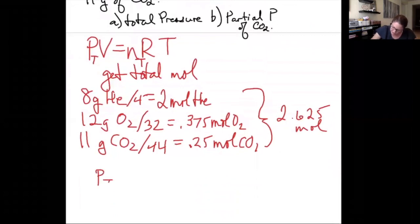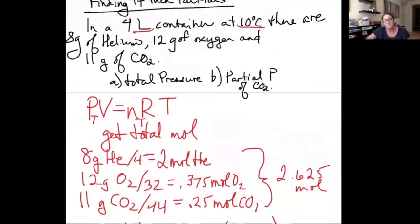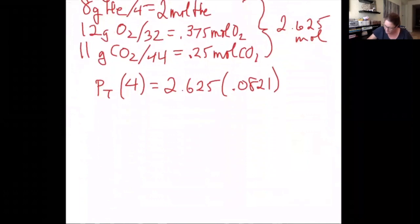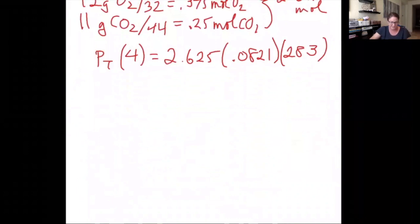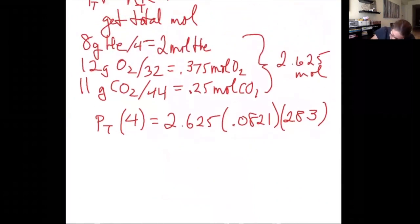So total pressure, the volume given in the problem statement is 4 liters. Moles is 2.625. R is 0.0821. And let's scroll back up for our temperature. Temperature was 10 degrees Celsius. Converting that to Kelvin is 283 Kelvin. So 2.625 times 0.0821 times 283 divided by 4 gives me a total pressure of 15.2 ATM.